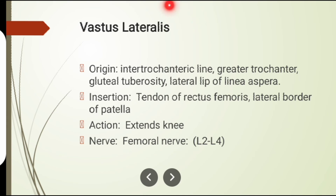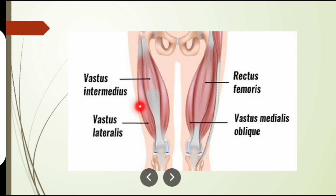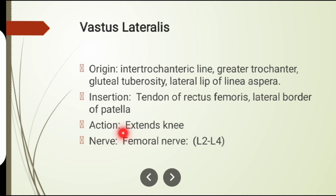The third muscle involved in knee extension is vastus lateralis. Its origin is from the intertrochanteric line, greater trochanter, gluteal tuberosity, and lateral lip of the linea aspera. Its insertion is on the tendon of rectus femoris and lateral border of the patella. Action: knee extension. Nerve supply: femoral nerve.